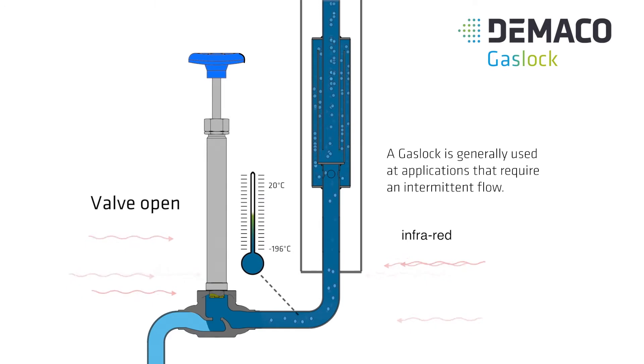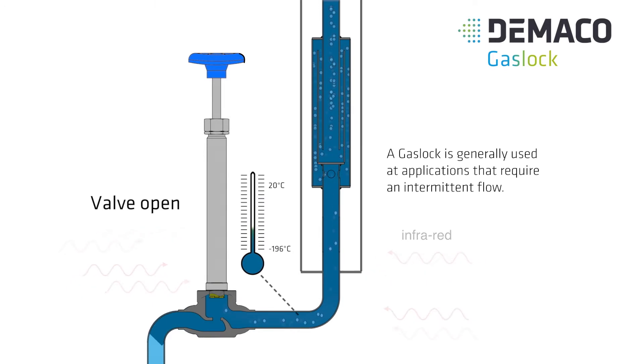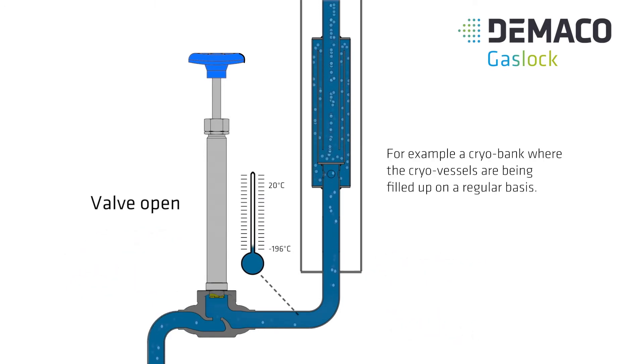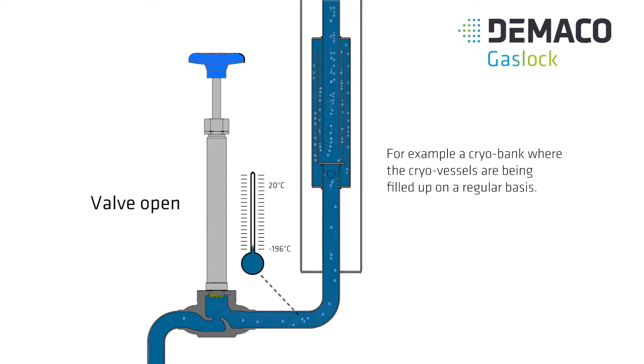A gas lock is generally used at applications that require an intermittent flow. For example, a cryobank, where the cryovessels are being filled up on a regular basis.